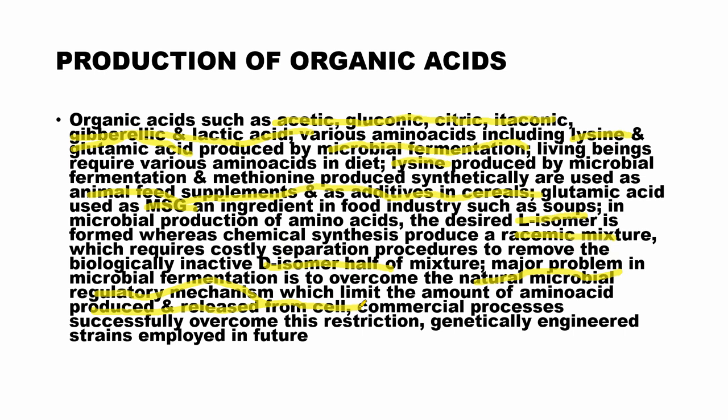We treat microbial cells with a few chemical substances — even a few antibiotics — to make them more permeable so that amino acids are secreted outside the cell. Commercial processes have successfully overcome this restriction, and even genetically engineered strains are employed. The application of genetic engineering is also taking place in the production of organic acids and amino acids.